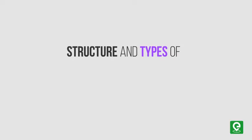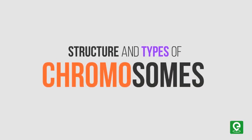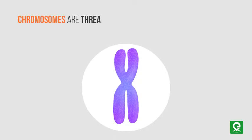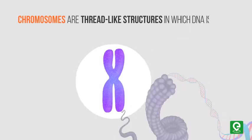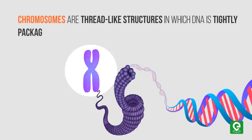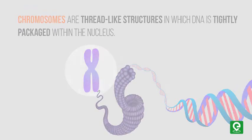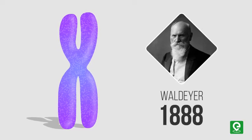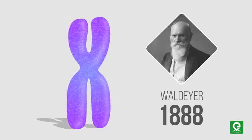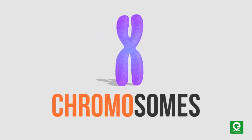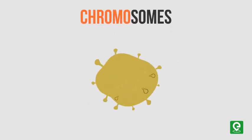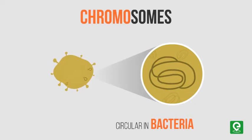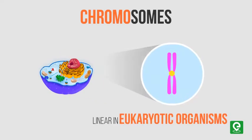Chromosomes are thread-like structures in which DNA is tightly packaged within the nucleus. The term chromosome was coined by Waldeyer in 1888. Chromosomes exhibit different structures: circular in bacteria and linear in eukaryotic organisms.